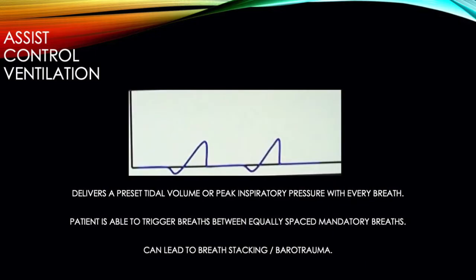Assist control ventilation was the fix to the CMV problem of patients not being able to trigger breaths. In this mode, the ventilator is set to deliver a set number of breaths per minute at a set volume or pressure. In addition to that, the patient can initiate a breath at any time, and the ventilator will assist the patient with a full breath.